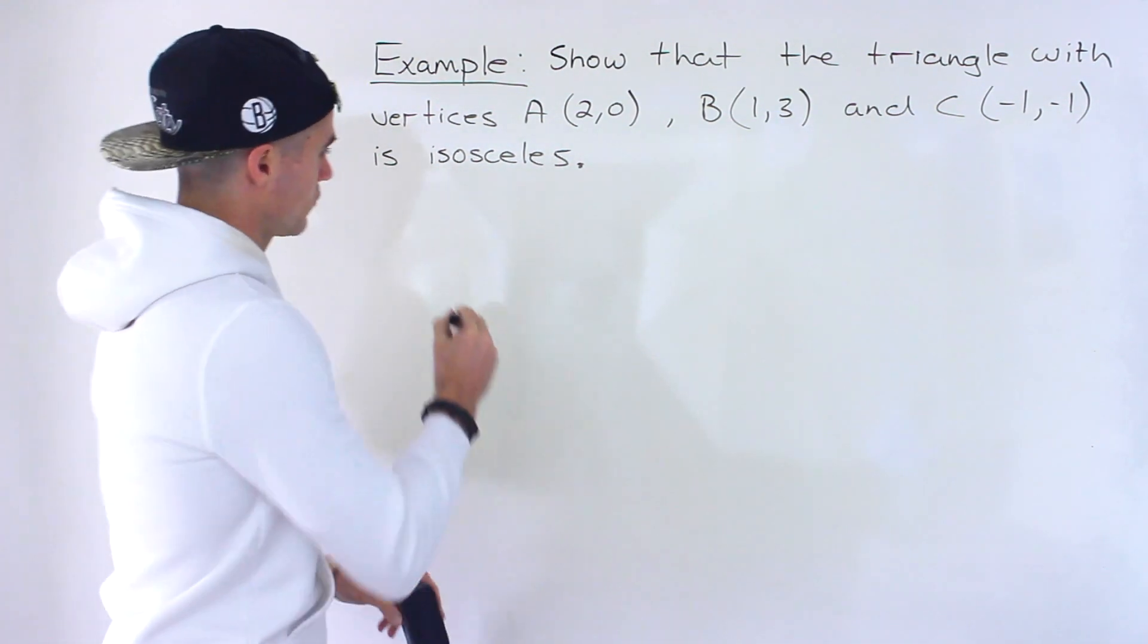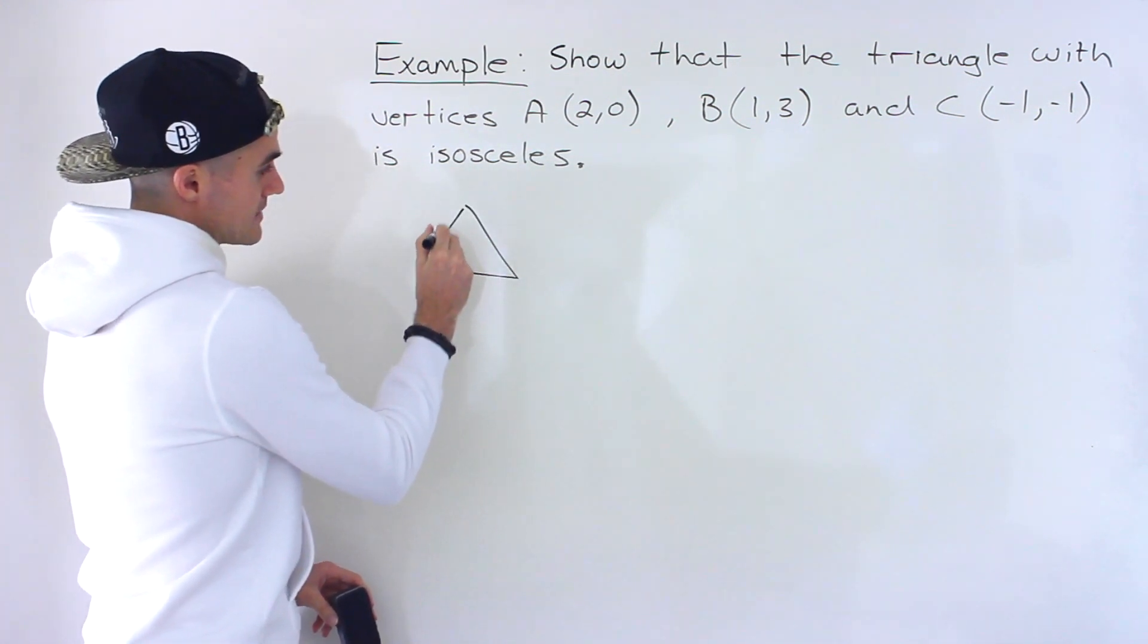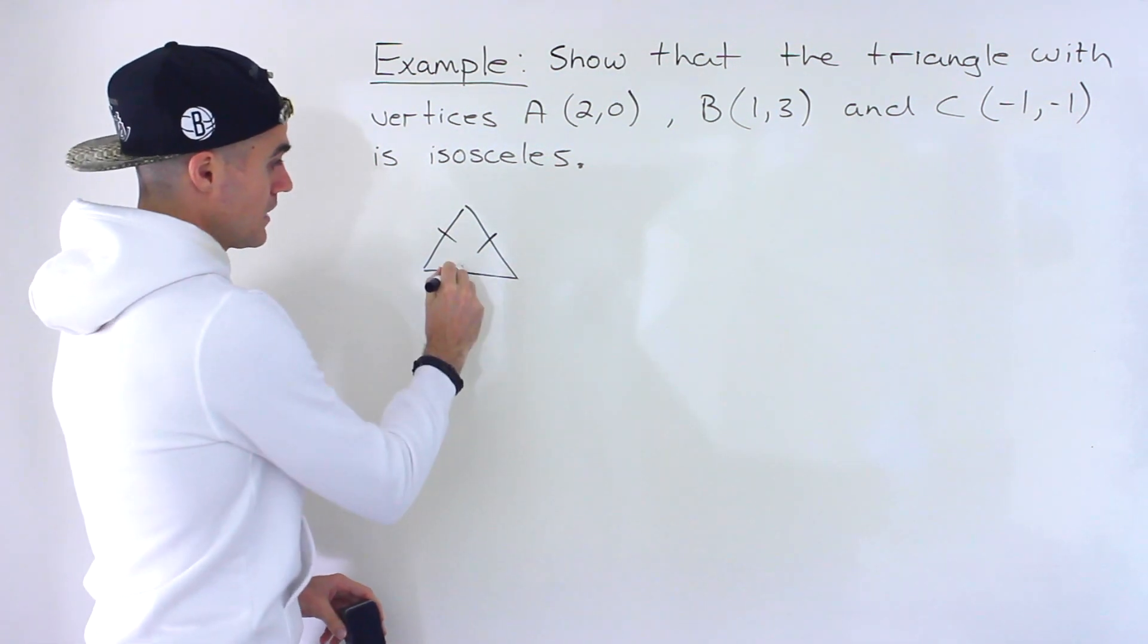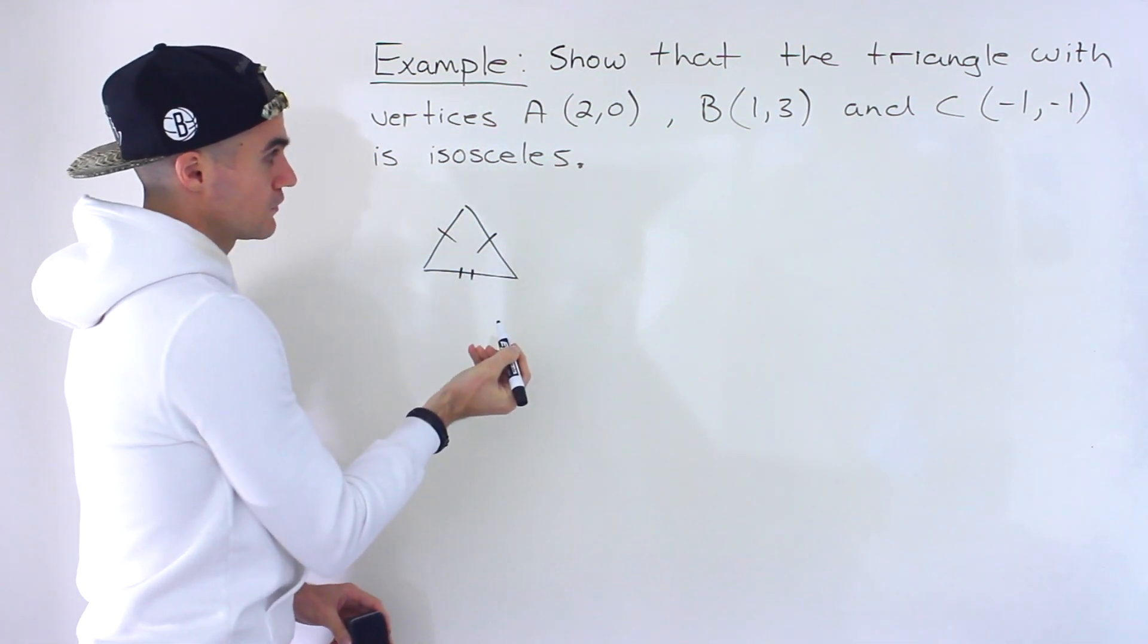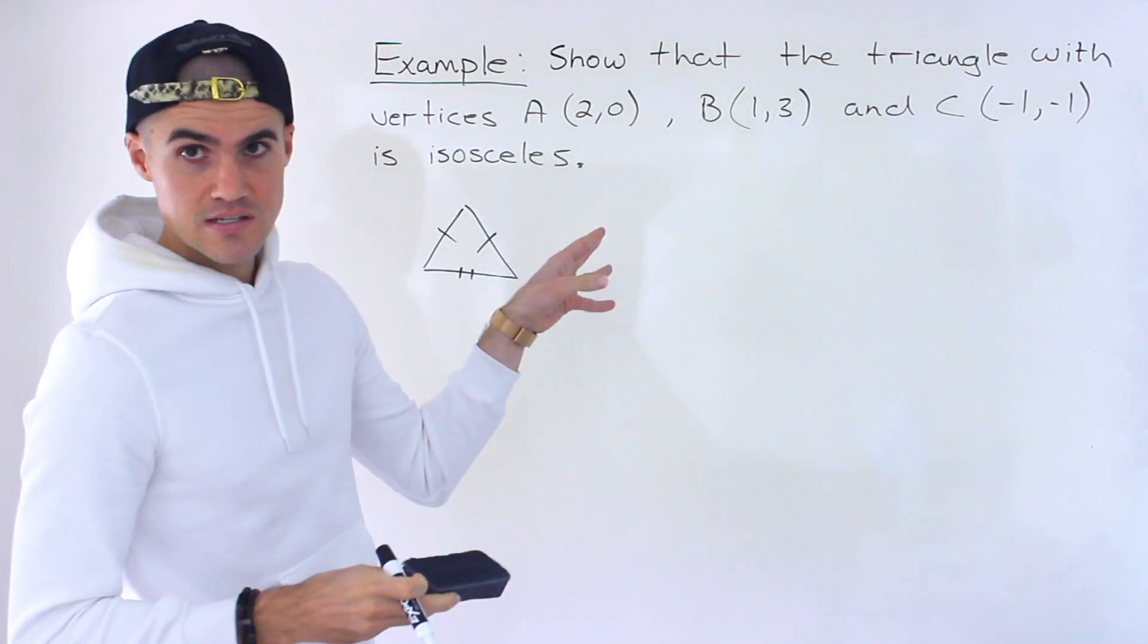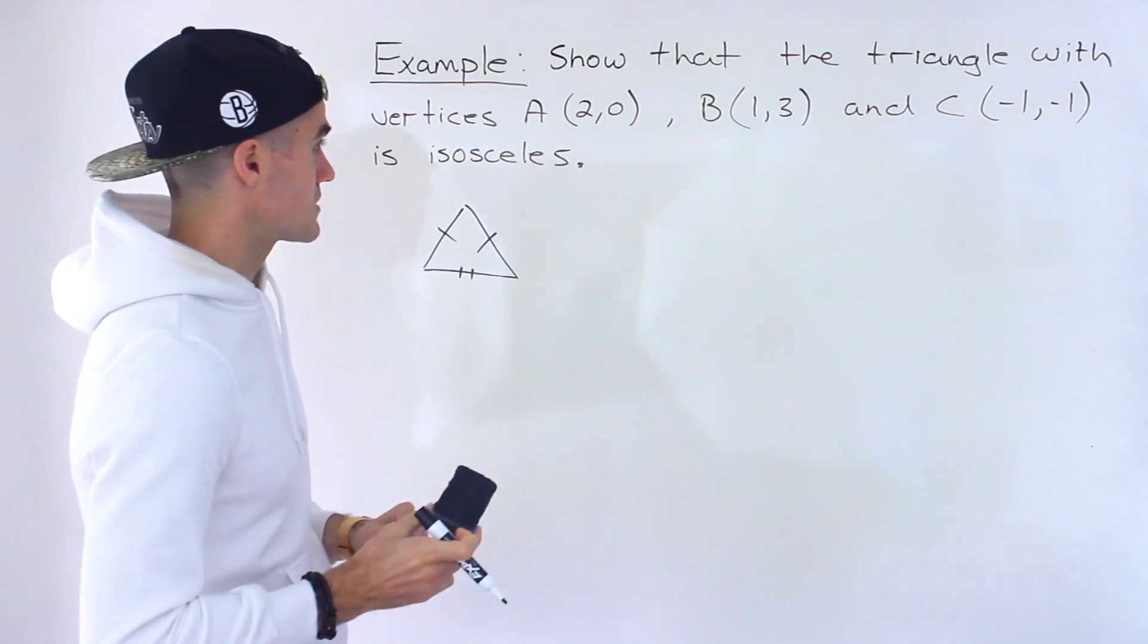So just as a quick review, an isosceles triangle has two sides that have the same length, and then this side here would be a different length. So what we want to do is find the length of each side, and then if two of the lengths equal, then we know it's going to be an isosceles triangle.